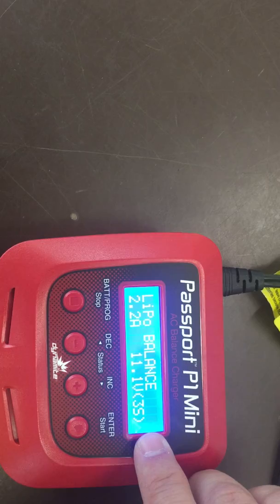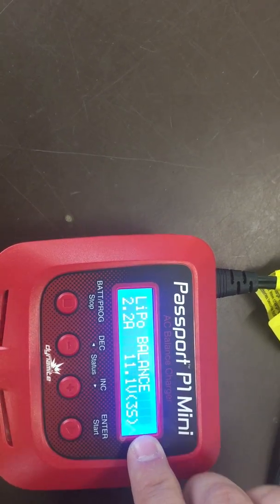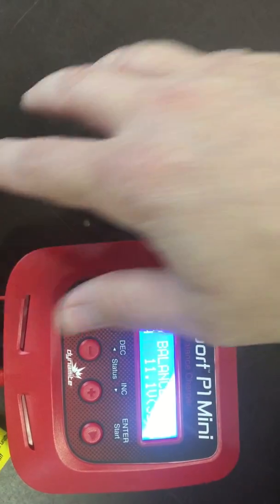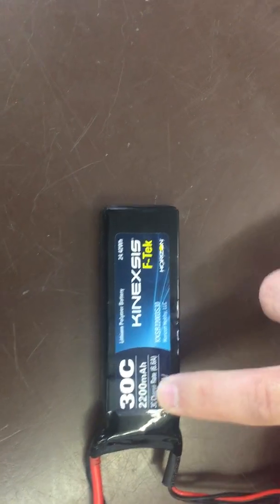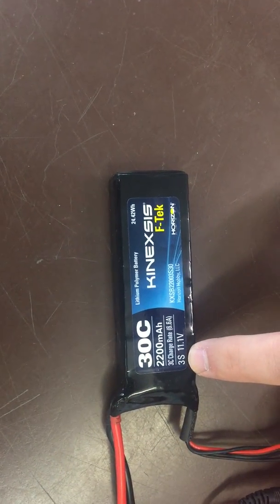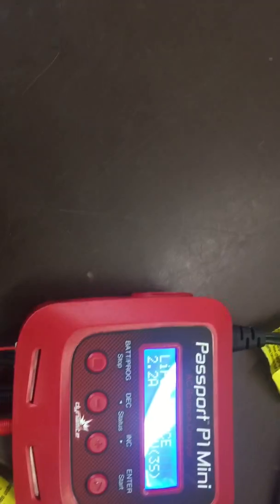It's already set for a 3s or three cell battery, and you can tell that's correct because if you look at your battery, it's a 2200 milliamp hour battery, so that's 2.2 amp. It says 3s right there. So that's the correct settings.